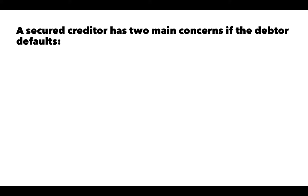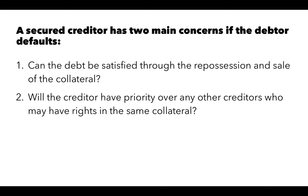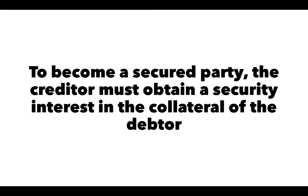A secured creditor has two main concerns if the debtor defaults. First, can the debt be satisfied through the repossession and sale of the collateral? And second, will the creditor have priority over any other creditors who may have rights in the same collateral? To become a secured party, the creditor must obtain a security interest in the collateral of the debtor.